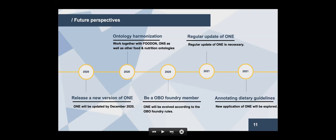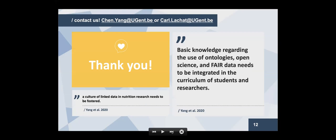We are also going to introduce new applications of ONE — in the next few years, we plan to annotate dietary guidelines and nutrition policies and to see how to organize knowledge representation and statistical analysis. Finally, I would like to say that basic knowledge regarding the use of ontologies, open science, and FAIR data needs to be integrated into the curriculum of students and researchers. We really believe we need more nutrition researchers to know what an ontology is and try to apply it. We also have a big interest in training or education about ontology in nutrition programs and welcome worldwide collaboration in this regard.